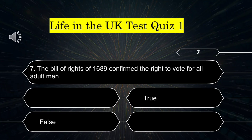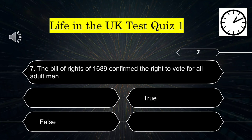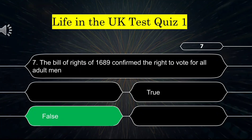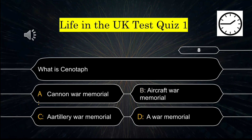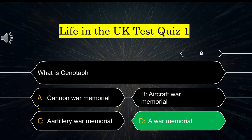Question number 7: The Bill of Rights of 1689 confirmed the right to vote for all adult men — True or False? Question number 8: What is the Cenotaph? Your options are: A) a cannon war memorial, B) an aircraft war memorial, C) an artillery war memorial, or D) a war memorial. The correct answer is a war memorial.